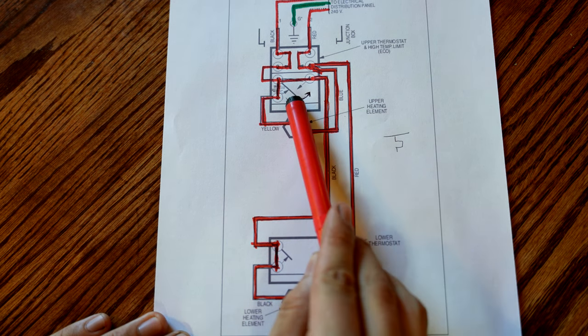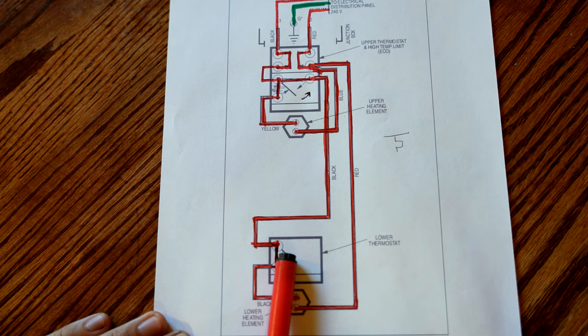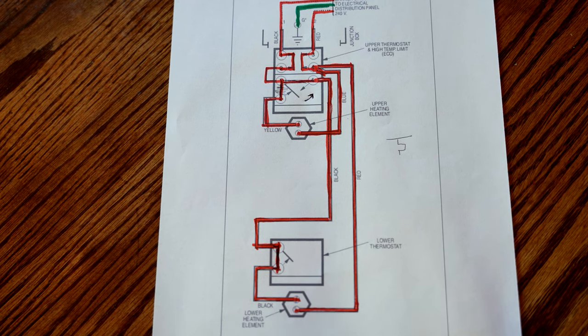At this point, this thermostat is satisfied, this element is off, this thermostat is calling for heat, and this element is on. Once this thermostat is satisfied, and this switch opens up, the water heater is then in standby mode until somebody else uses some hot water, and that cycle will repeat itself.